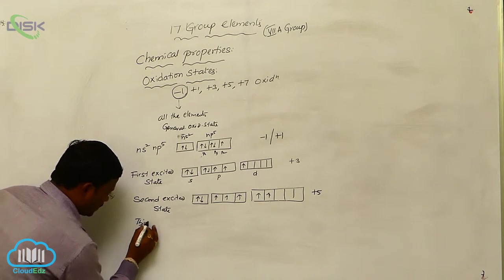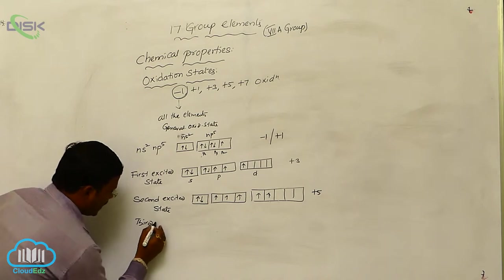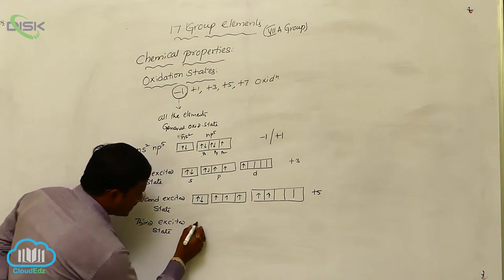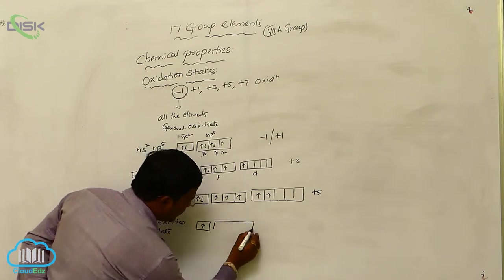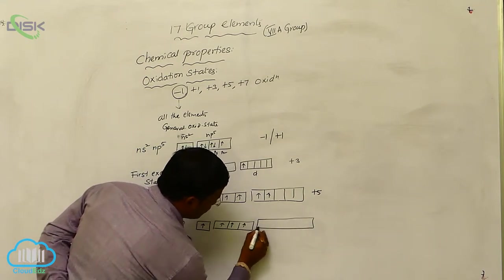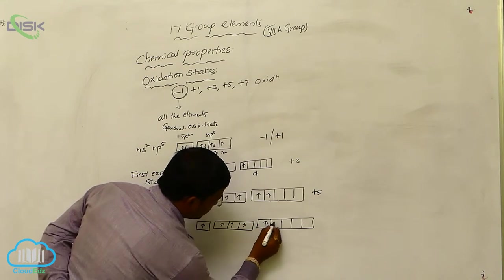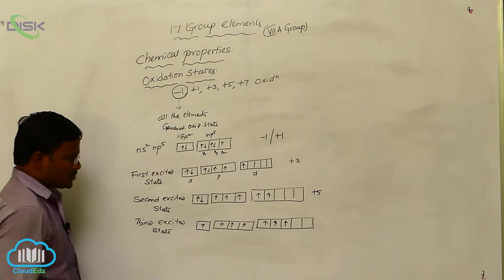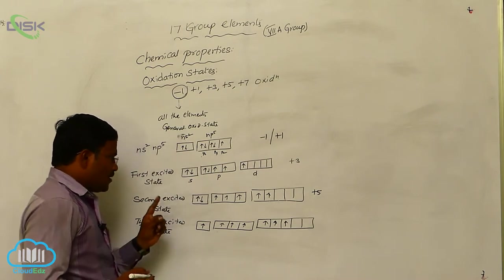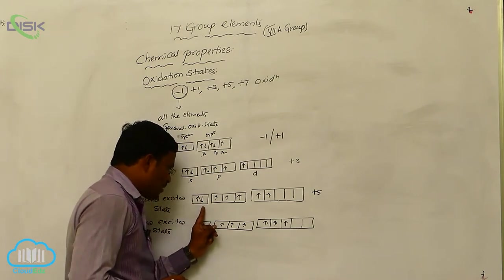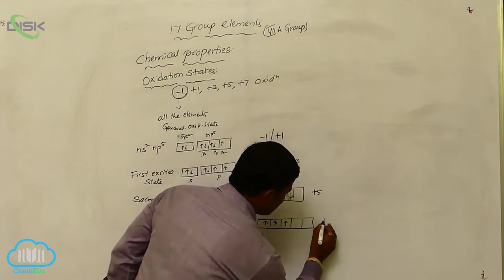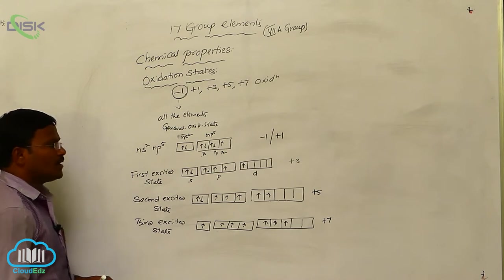Similarly, some elements of the same family like bromine and iodine in their third excited state — especially iodine in its third excited state — excitation of an electron even from the s orbital into the d orbital takes place. S orbital to d orbital: 1, 2, and one more electron from the s orbital into here. In their third excited state, the electron from the s orbital jumps to the d orbital. Hence, how many single electrons are present? 7 — hence plus 7 oxidation state results from the third excited state.